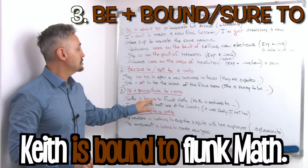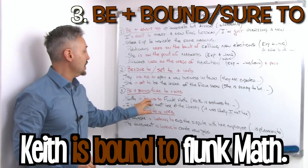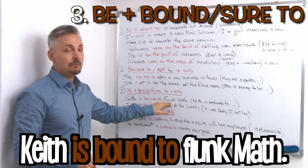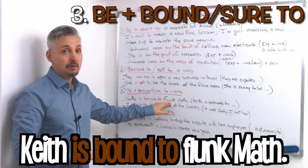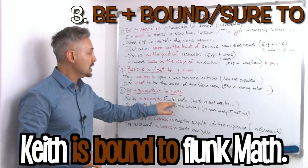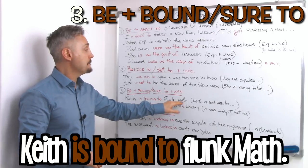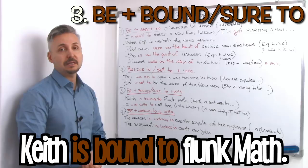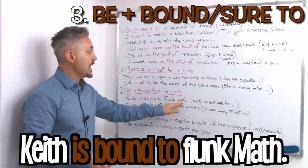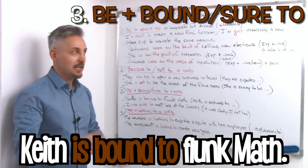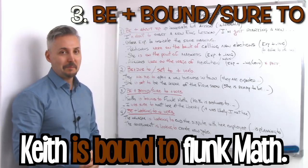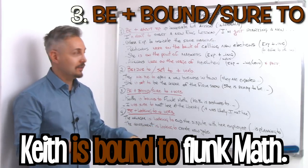So Keith is bound to, and then we have a verb here without ing, to flunk. Keith is bound to flunk math. Math is the subject. Math, English, geometry, etc. And in this case I chose to talk about math because I'm not good at math at all.